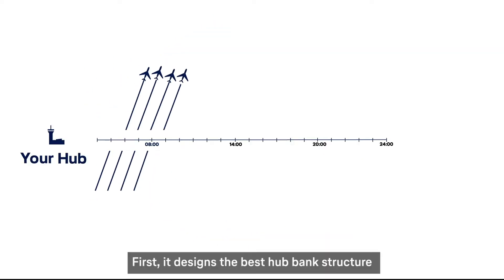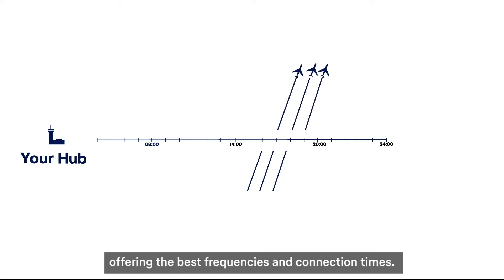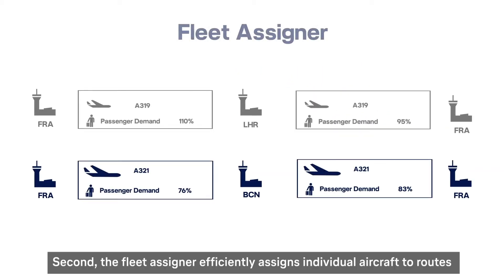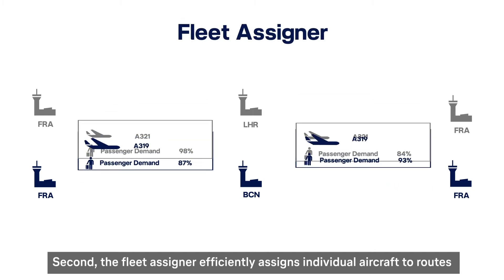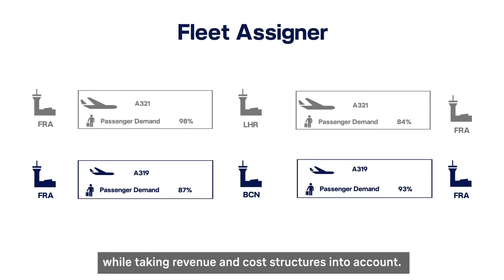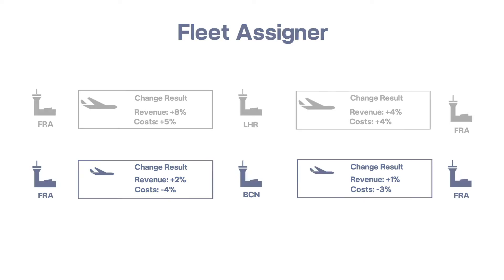First, it designs the best hub bank structure, offering the best frequencies and connection times. Second, the Fleet Assigner efficiently assigns individual aircraft to routes while taking revenue and cost structures into account.